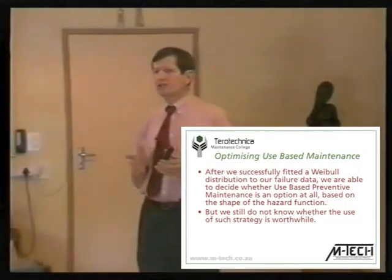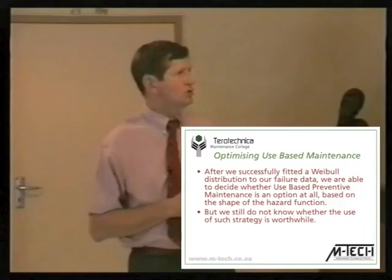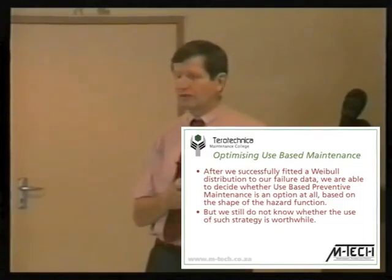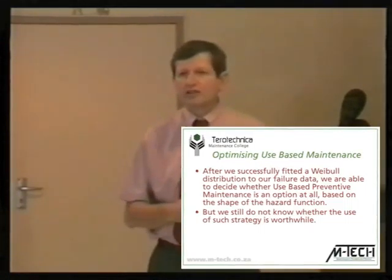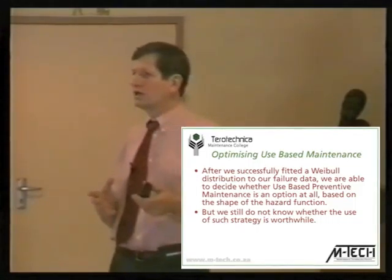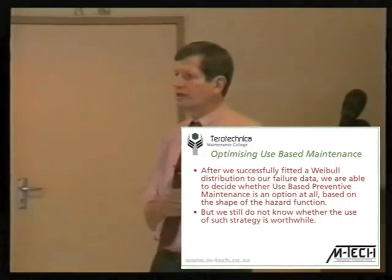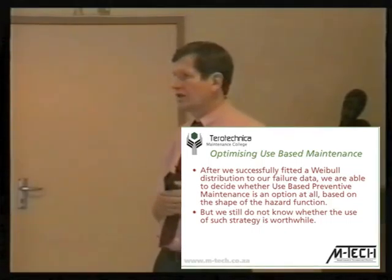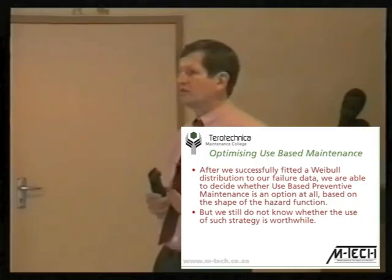We say that after we have successfully fitted a viable distribution to our failure data — which we will be doing when we look at the computerized analysis — we're then able to decide whether use-based preventive maintenance is an option at all, based on the shape of the force of mortality curve. Only in the case of an increasing force of mortality curve can we practice use-based preventive maintenance.